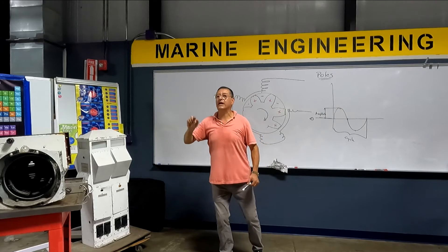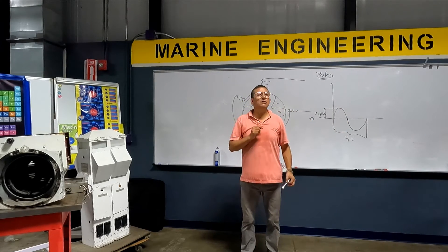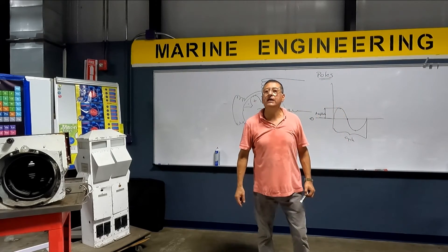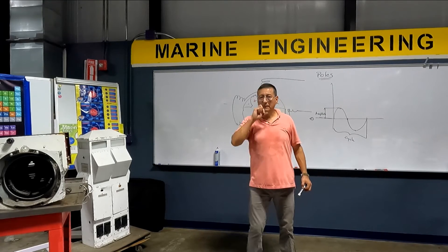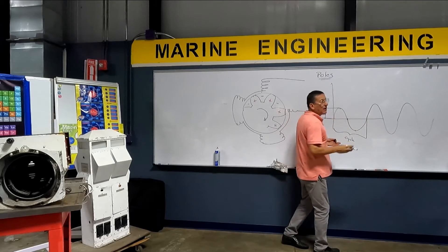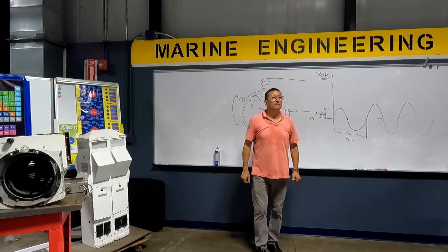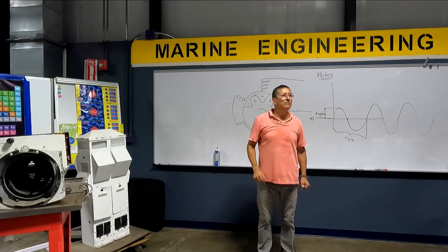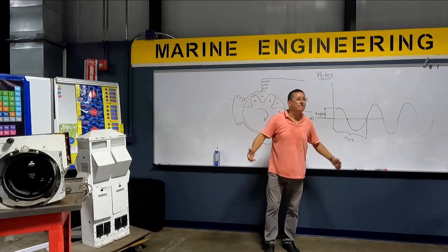American current has 60 cycles per second. European current is 50 cycles per second. In one second of American power you have 60 cycles. What is the amplitude of American current? The amplitude is the voltage. How much is the voltage per phase in American current? Around 120 volts.